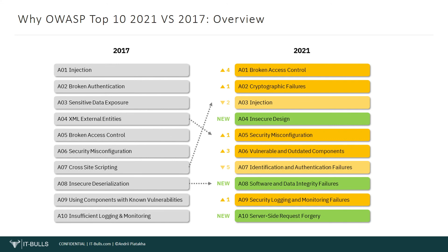We have just reviewed each of these items. When we review each of these categories in a separate lesson, I will share with you all the details and comparative analysis between OWASP Top 10 2017 and Top 10 2021, because I have much more things to add — this is just an overview lesson. I believe that is enough for the overview, and we will learn more details in the following lessons.